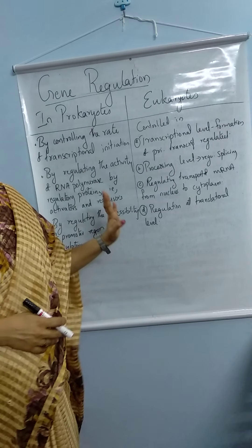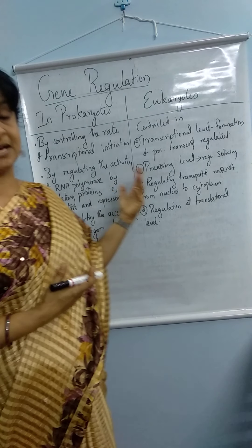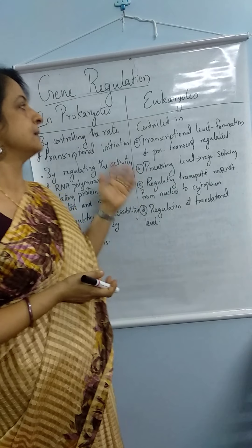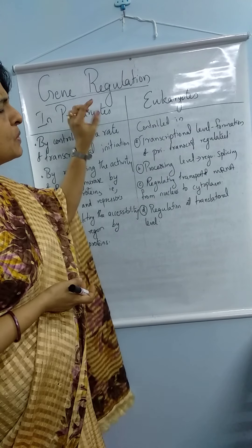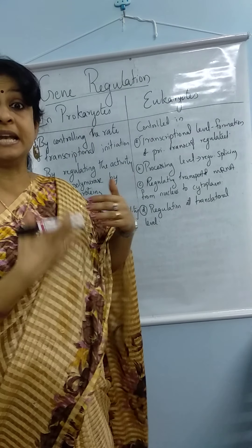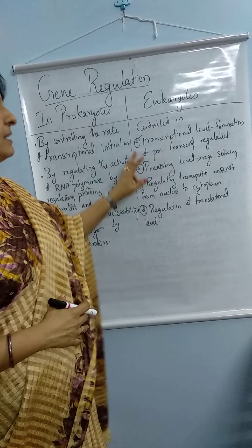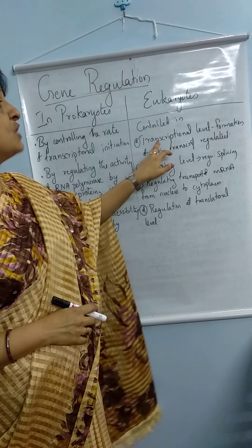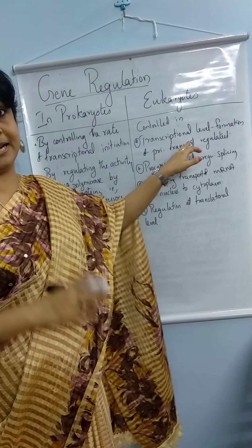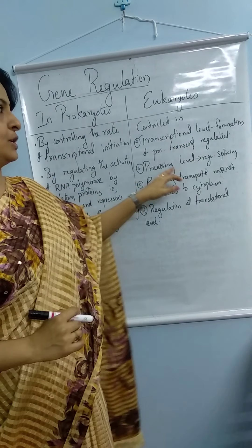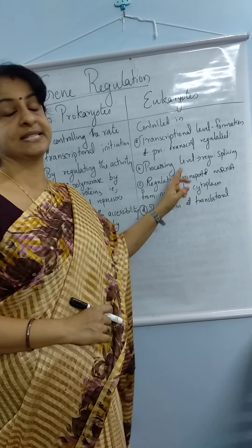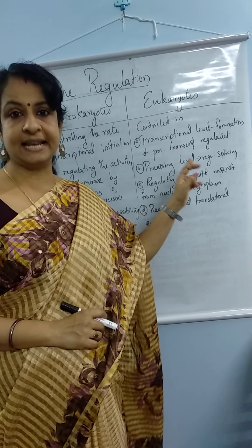Now coming to eukaryotes — how gene expression is controlled in our case. In eukaryotes it is controlled at different levels. The first one is at the transcriptional level itself, where the formation of the primary transcript is regulated.